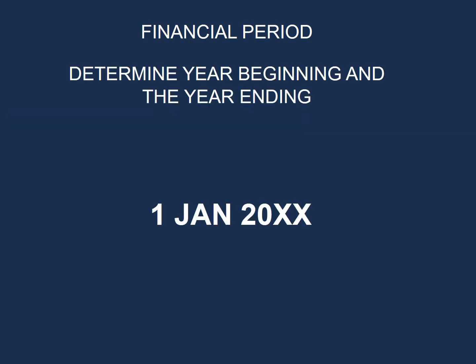When working with financial statements, it's important that we can determine the year beginning and the year ending, because not all companies will have a financial beginning of 1 January and an ending of 31 December. There is a simple method to determine the year beginning from the year ending date. Let's have a look at a few examples.